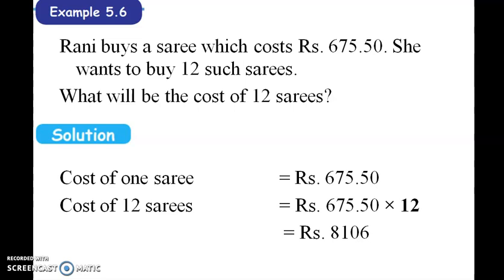Rani buys a saree which costs Rs. 675.50. She wants to buy 12 sarees. This is a multiplication problem — since it involves multiple sarees, we multiply to find the total cost.